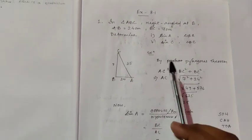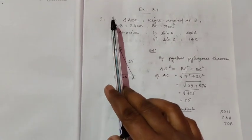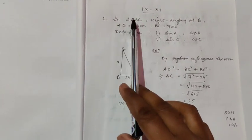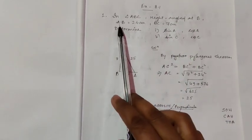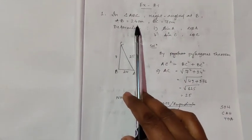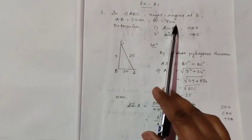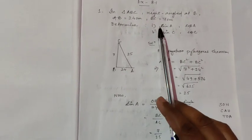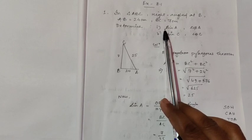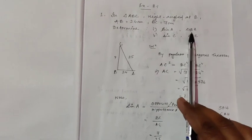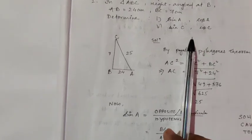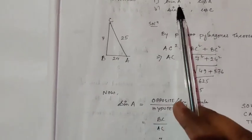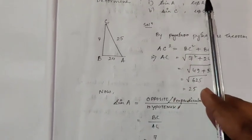Let us start the video. The first question: there is a triangle ABC, right-angled at B. The side AB is given as 24 and BC is given as 7 centimeters. Now you have to determine some trigonometric ratios — sine A, cos A, sine C, cos C. So you have to find what is sine A and what is cos A.